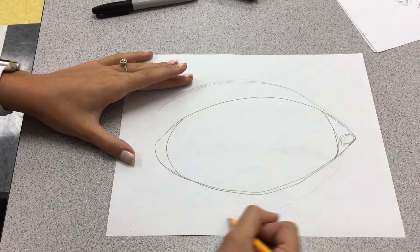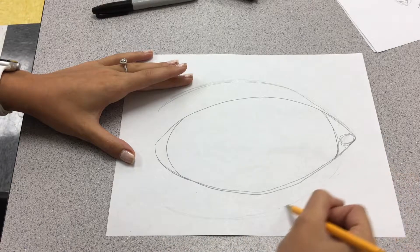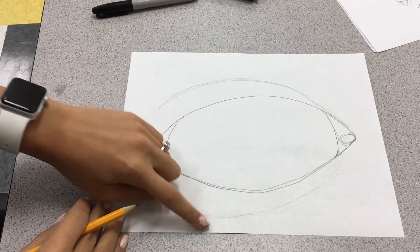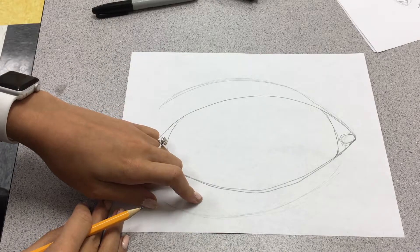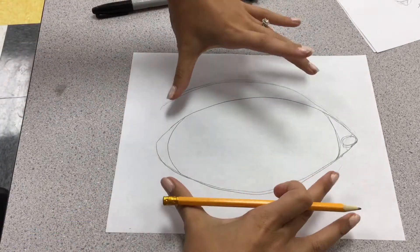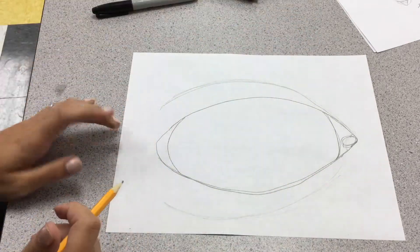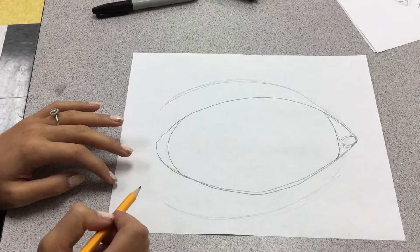And if you want to add some more details, you can add another crease down here. Again, pretending our eyeball is this big. There's another crease down here.